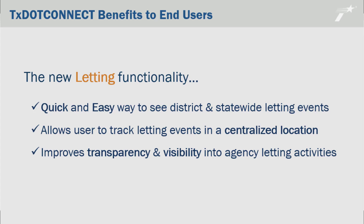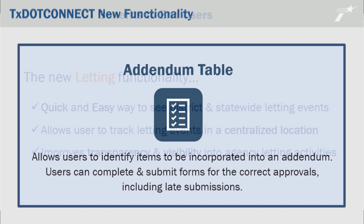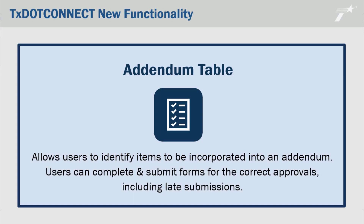Currently, the calendar functionality is focused on statewide letting and district letting, but we're adding in the required pre-bidder conference events as well in the future. That's terrific. I know one of the primary goals for TxDOT Connect as a system altogether was to increase transparency, so I think it's just another way everybody is going to be able to see what they need all in one place. Joe, you also mentioned something called the addendum table. What exactly does that do?